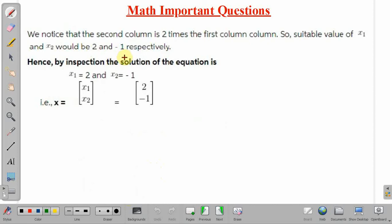So we can say that x1 will be 2 and x2 will be equal to minus 1. Hence, by inspection, the solution is x equal to the matrix with elements 2 and minus 1.